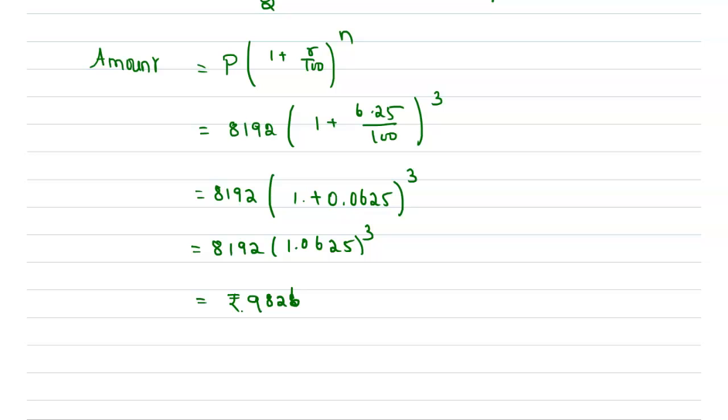Now we need to find the compound interest. Compound interest formula is total amount minus principal, which is equal to 9826 minus 8192, which is equal to 1634. Hence the correct option is 1634. This is the compound interest as per the details given.